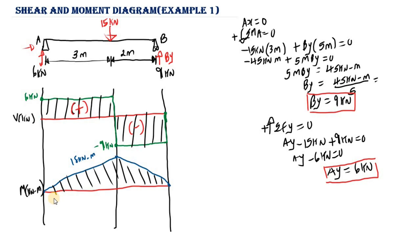This is the moment diagram — it is a positive moment diagram because it is above the origin, with a peak of 18 kilonewton-meters. To summarize: positive shear on the left side, negative shear on the right side, and a positive moment diagram peaking at 18 kilonewton-meters. In future videos we will look at more examples including concentrated loads, triangular loads, and various other load types. Please subscribe, like, and share if you found this helpful.